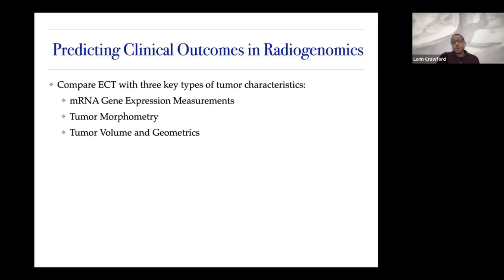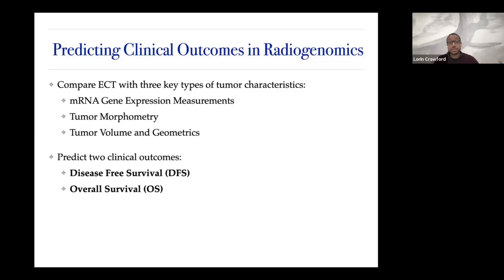The main crux of this first study was asking: how predictive is a topological summary of someone's images versus key tumor characteristics used in other areas? We compared Euler characteristics as predictors versus gene expression, tumor morphometry, tumor volume, and other gene metrics. We asked how predictive these are of disease-free survival and overall survival — taking each predictor in isolation, throwing them into the GP model, splitting data into 80% training and 20% test, repeating 100 times, and recording accuracy based on root mean squared error.